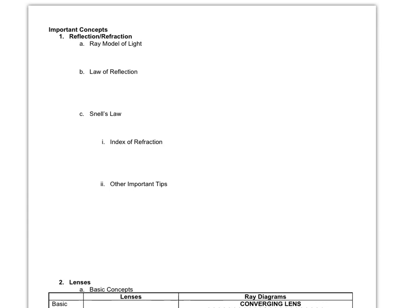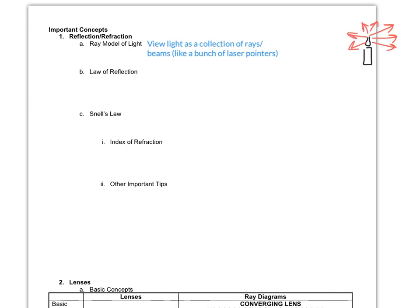Let's start going through our concepts here for optics in preparation for the upcoming test. We'll start with just a basic definition of the ray model of light. The ray model of light is the idea that we're going to view light as a collection of rays or beams. Think of it like a laser pointer — if we have some object here, say a candle that is burning, coming off of that candle we're going to have all these rays of light.